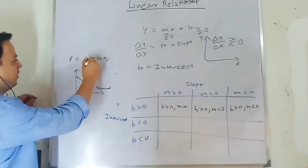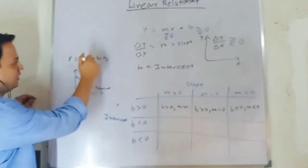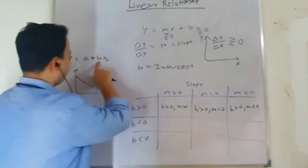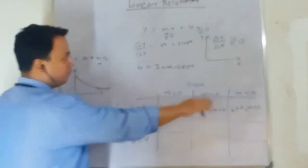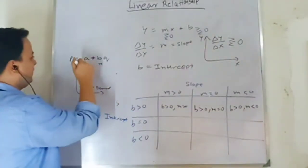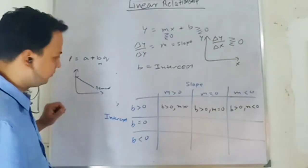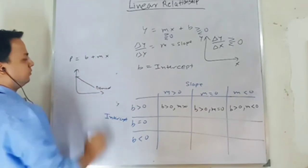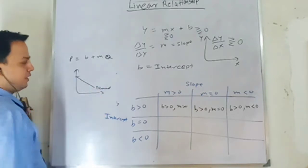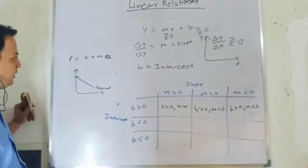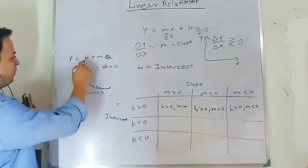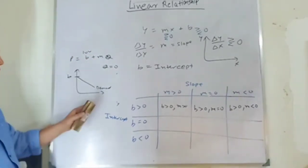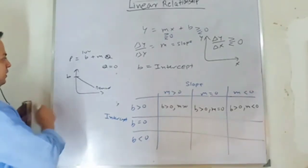You can write the same equation as Q = b plus m·x, where m is negative and b is your intercept. When price equals the intercept value, say 100, the quantity demanded will be zero. Then as price is reduced, the quantity demanded increases. So slope m is negative here — this is the demand curve.